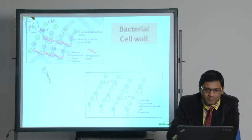The tetrapeptide side chain of gram-positive cell wall, the sequence is L-alanine, D-glutamine, L-lysine, and D-alanine.